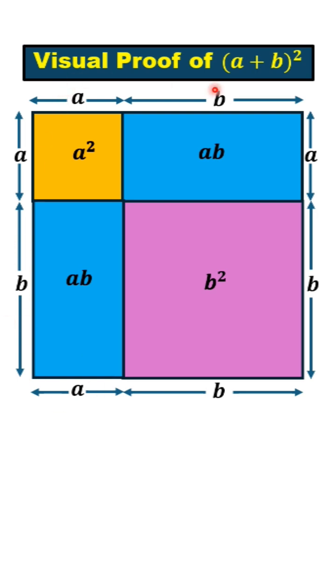So this complete figure is a square with side length (a+b), and its area is equal to (a+b)², which is equal to the sum of these four areas.